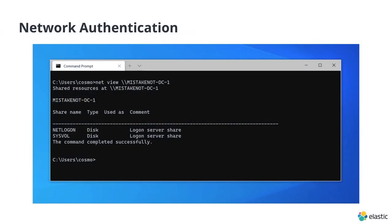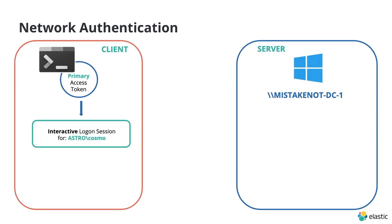The next topic is network authentication. In a classic domain scenario, you as a user want to access some resources across the domain, such as a file share. The access token and logon session are unique to the client machine, so the client can't simply send its token over the wire — the server can't verify who you are just because you claim to be that user, and it doesn't correspond to a meaningful logon session. So effectively, you need to re-authenticate to the server. For interactive logons and every type except network logons, Windows will automatically cache your credentials — whether it's a Kerberos ticket or an NTLM hash — and will automatically try to authenticate on your behalf.